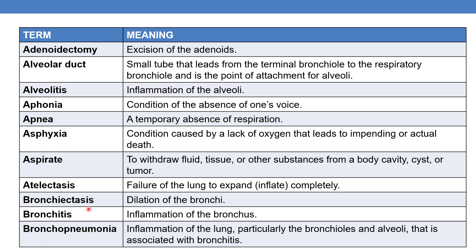Ectasis means dilation. The next term is bronchiectasis, that is the dilation of the bronchi. Bronchitis is inflammation of the bronchus. Bronchopneumonia is the inflammation of the lung, particularly the bronchioles and alveoli that is associated with bronchitis.